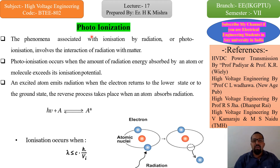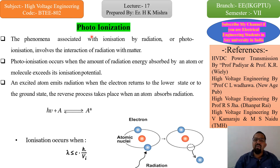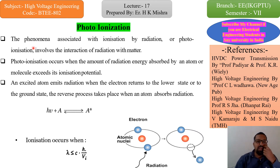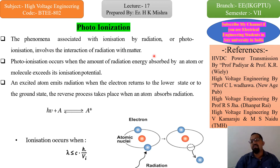We will now cover photo ionization. Ultraviolet radiation plays a key role in photo ionization, which is also a breakdown mechanism. The first point: the phenomena associated with ionization by radiation — photo ionization — involves the interaction of radiation with matter.